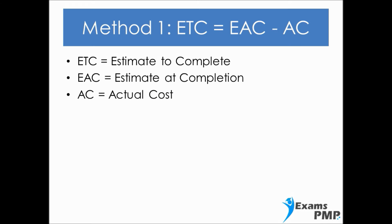The first method to calculate ETC is to use the formula: ETC equals EAC minus AC, where EAC stands for Estimate at Completion and AC stands for Actual Cost. In plain English, what this formula is saying is that the amount of money needed to complete the project is equal to the total budget minus the cost accumulated so far.